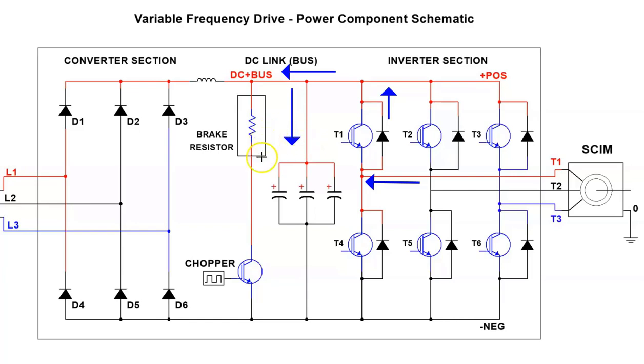Now, we have a braking resistor and a chopper circuit installed, and it will sense the DC bus voltage. It will turn on and send the energy out to the braking resistor. Not all drives have this circuitry. You have to spend a little bit more money to get this circuitry.